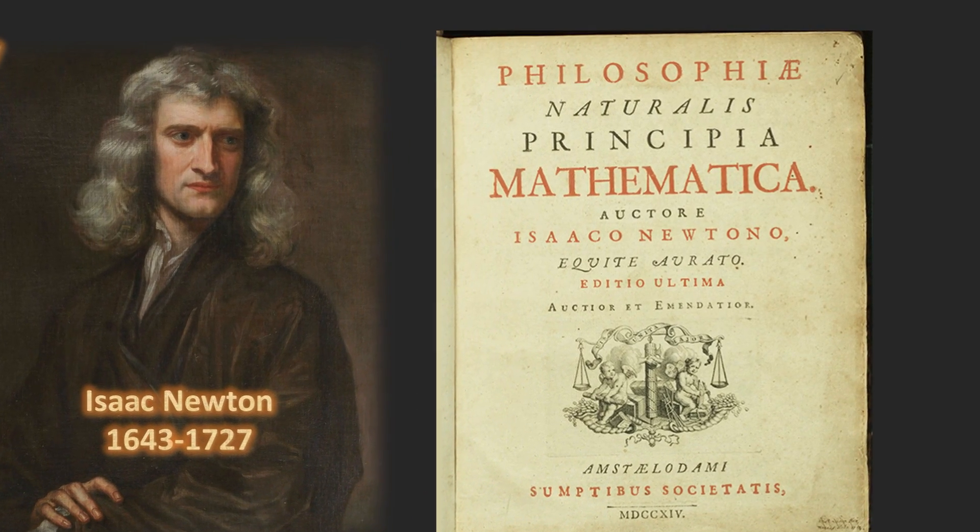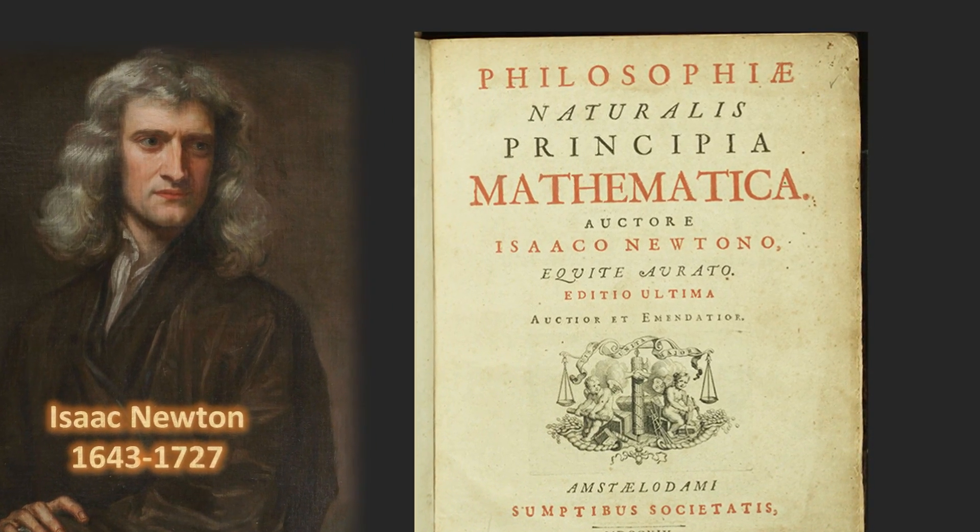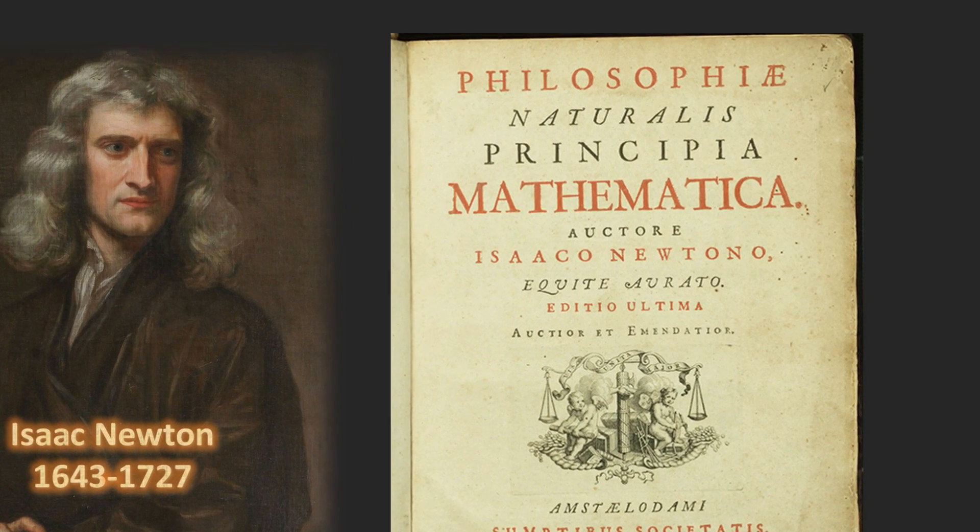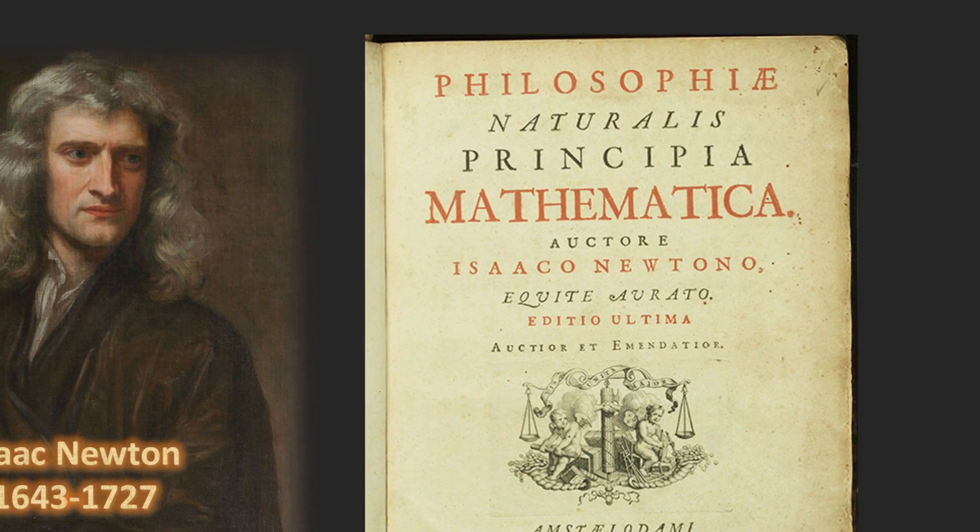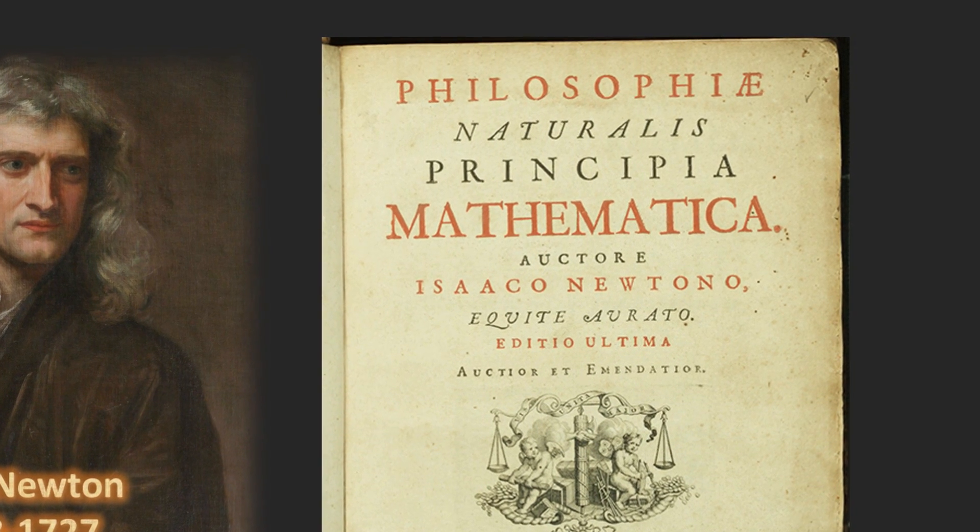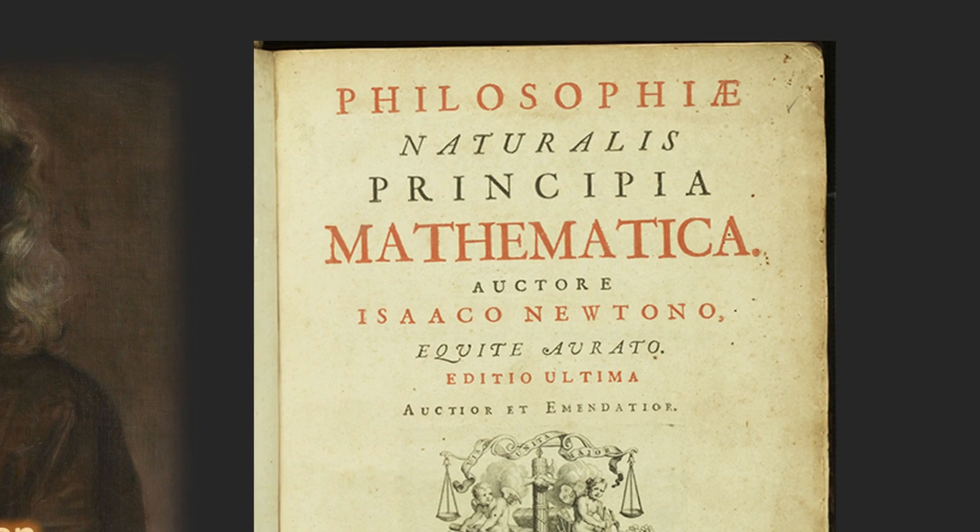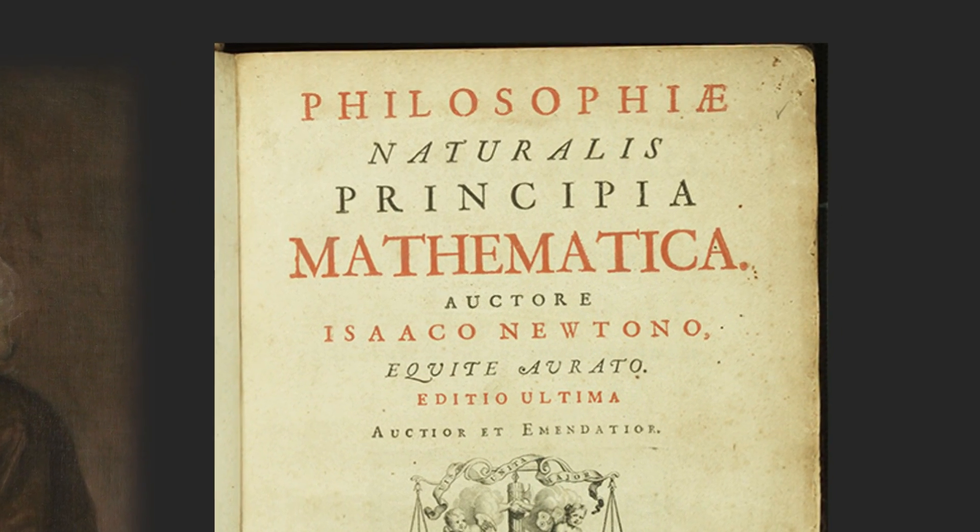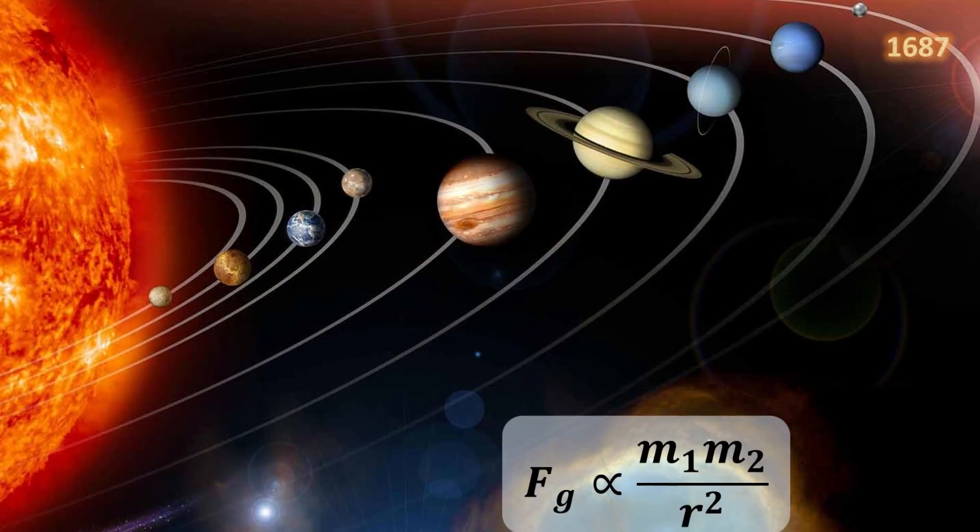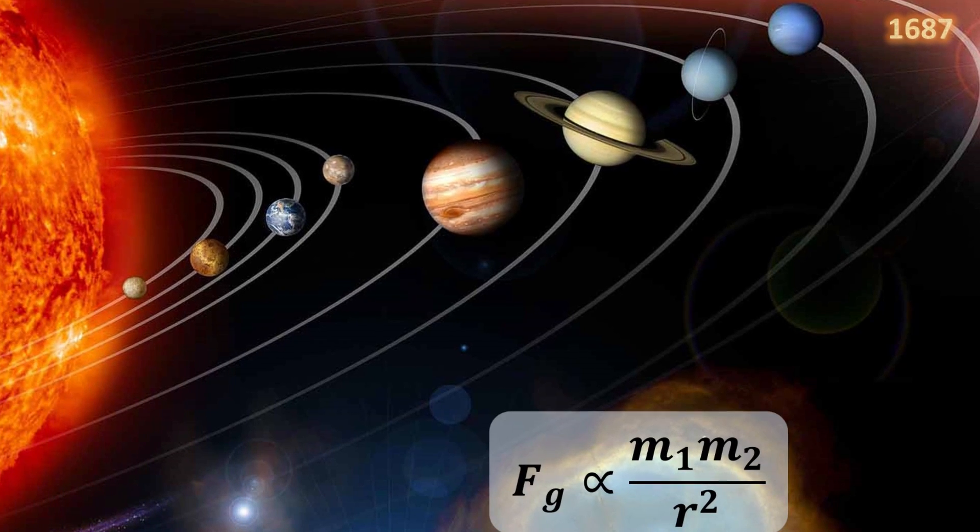Science entered a new era with the publication of Principia Mathematica by Isaac Newton in 1687. Newton's laws of motion laid the foundation for classical mechanics, where the relationship between a physical object's position, motion, and the forces acting upon it can now be described by precise equations for the first time.